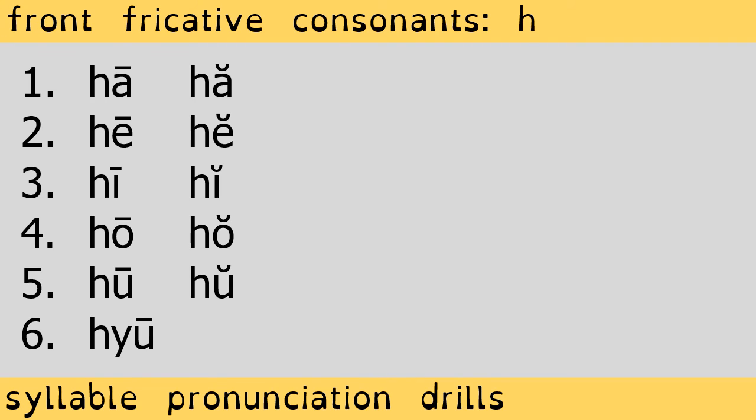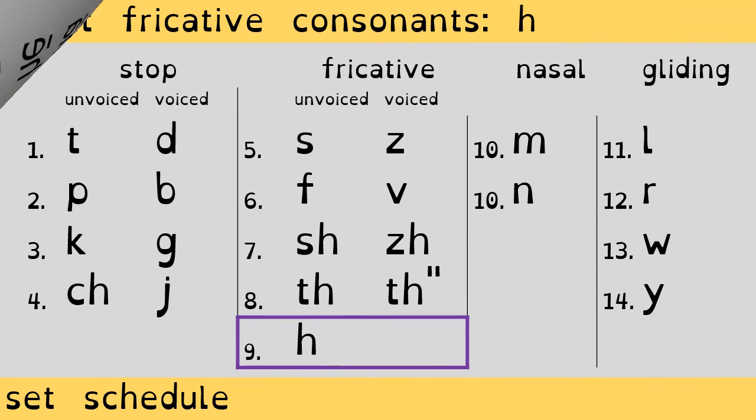This brings us to the end of today's set. Our next set of nonsense syllables will be the nasal consonants M and N. If you are looking for a full lesson, click the link in the description. Full lessons are longer. We move from nonsense syllables to words and from words to phrases.